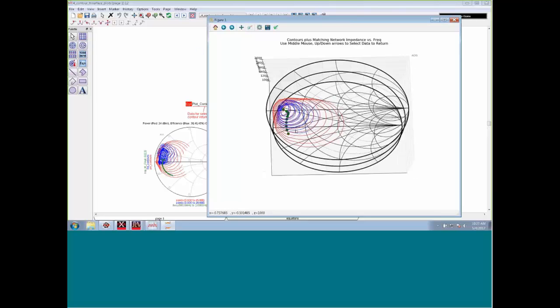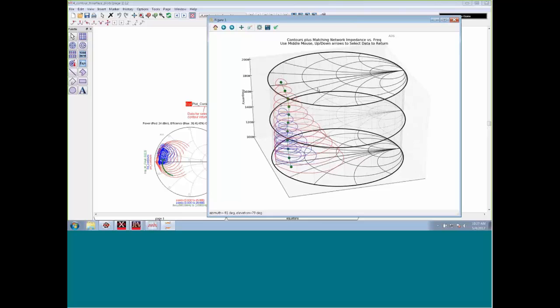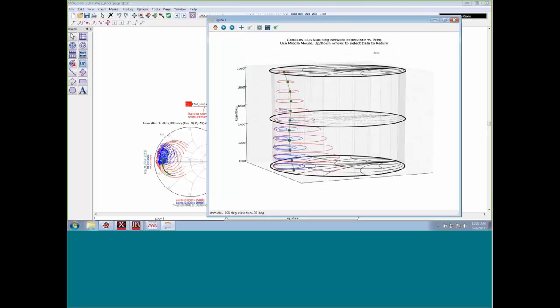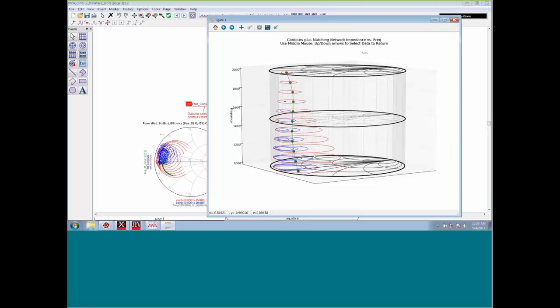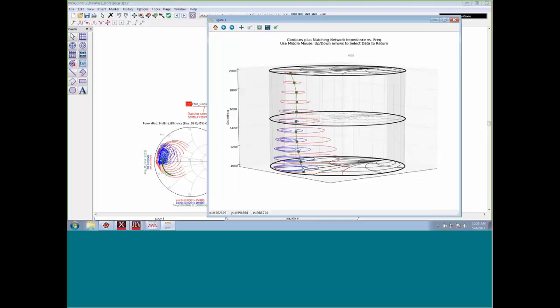Same thing. It's a jumbled plot, but we can slinky the contours into the Z dimension. That will allow us to see exactly what's going on in the matching network at different frequencies. Again, the red lines are the pout equals 24 dBm contour for this device. The blue contours are three levels of efficiency. This green line that's kind of snaking through everything, that's the impedance matching network at each frequency point.